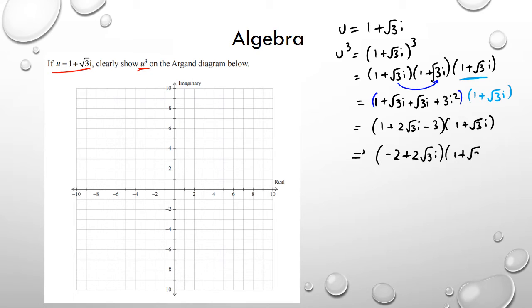Multiplied by (1 + √3i). So far so good. Again, treat it like a quadratic. So -2 times 1 is -2, and then -2 times √3i is going to be -2√3i. Then I have +2√3i times 1, so that's +2√3i.